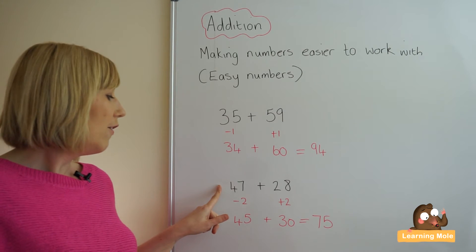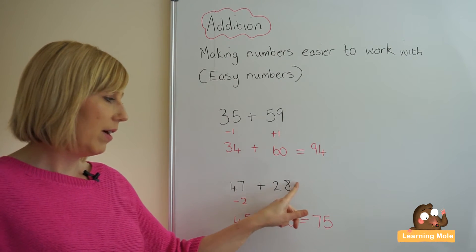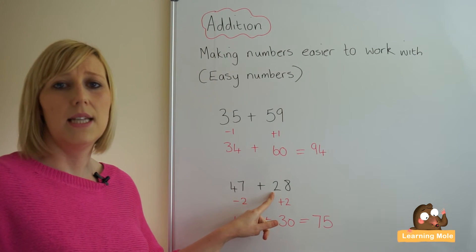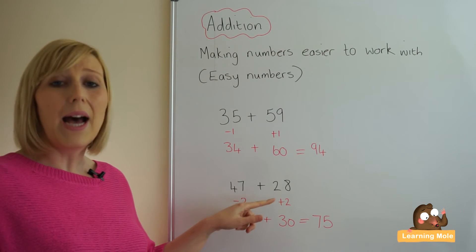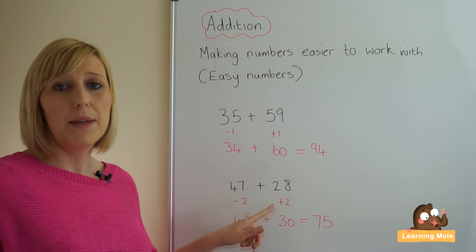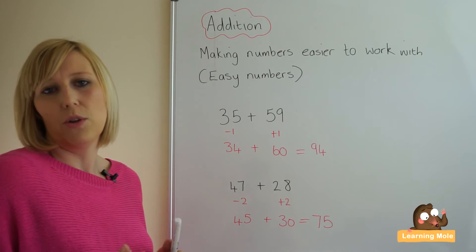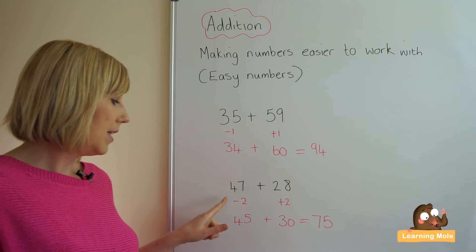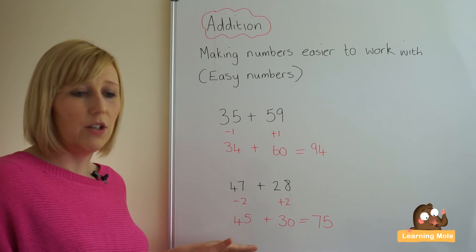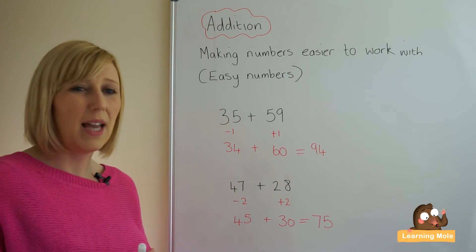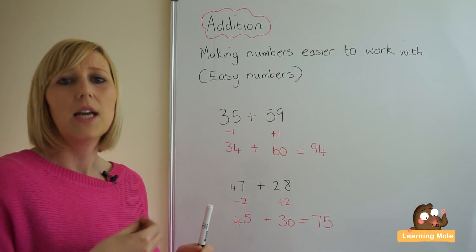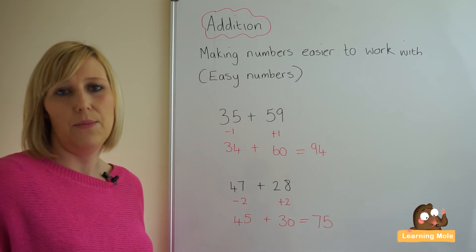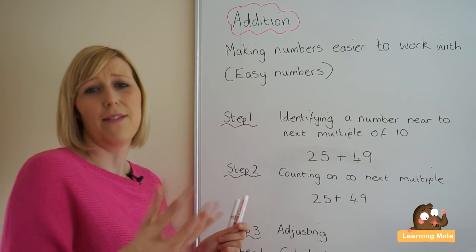Another calculation: 47 plus 28. Again, we're identifying the number that is near to the next multiple of 10. We're identifying 28 as being very close to the next tens number, so we're adding 2 to make it into 30. Because we've added 2, we need to take away 2 to balance the calculation. So 28 plus 2 makes 30, and 47 take away 2 is 45. Now we're just adding our tens and units without bridging through a tens number — it's easy to quickly add those together.